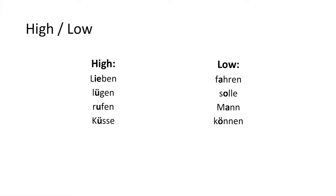Take note of how the positioning of your tongue changes as you switch between the two types of words. High words: Lieben, Lügen, Rufen. Low words: Fahren, Sola, Mann, Können.